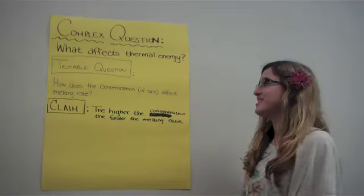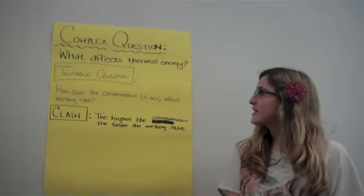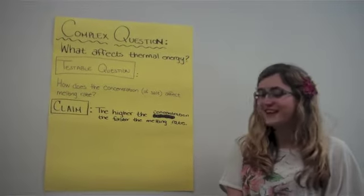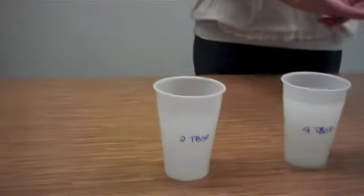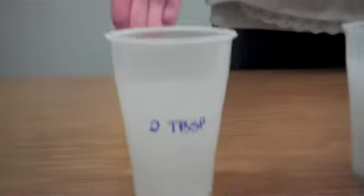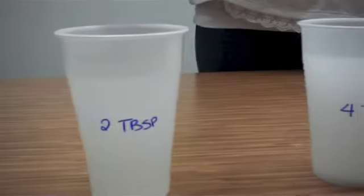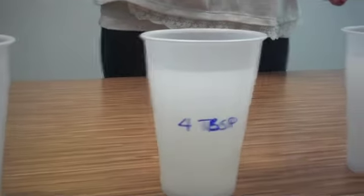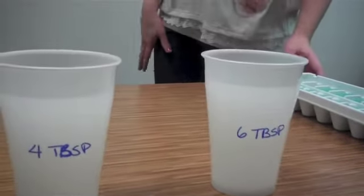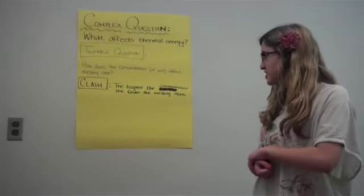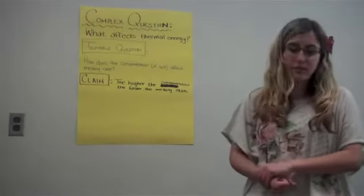Our next testable question is: how does the concentration of salt affect the melting rate? We have three glasses of room temperature water — two tablespoons of salt in one, four tablespoons in another, and six tablespoons in the last one. We're going to put an ice cube in each one. Our claim is that the higher the concentration, the faster the melting rate.